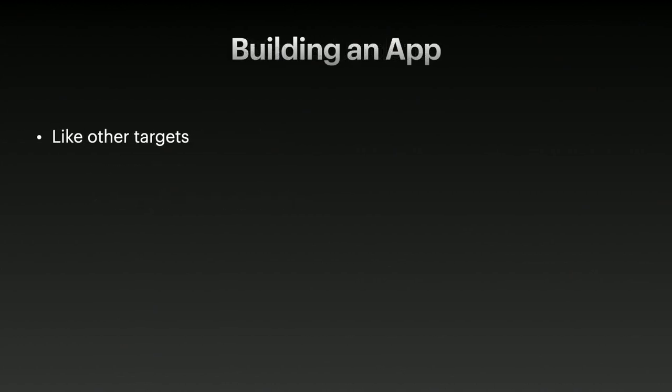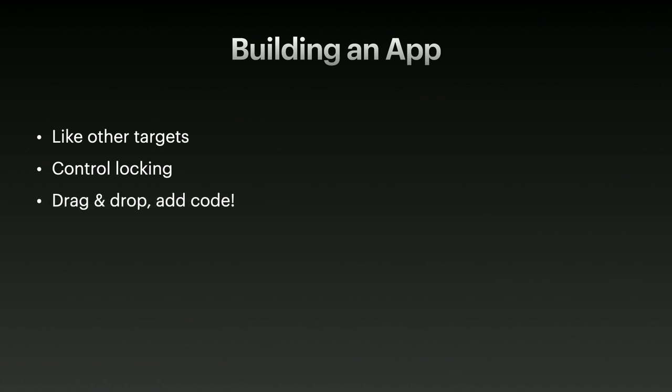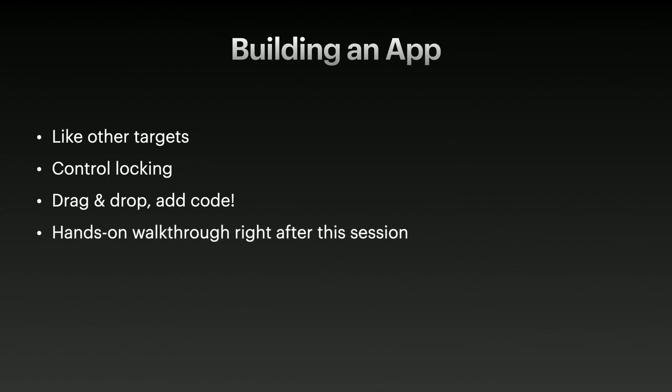Building an app — bottom line — even though Android as a platform is unique in several ways, we want every Zojo developer to feel at home, just like building for any of the other platforms, even though there are numerous differences under the hood. Android uses control locking for the layout and allows you to change control position in code. Drag, drop, add code, just like you're used to in Zojo. The very next session after this one is a hands-on walkthrough where Paul and I will take you through building some Android apps.